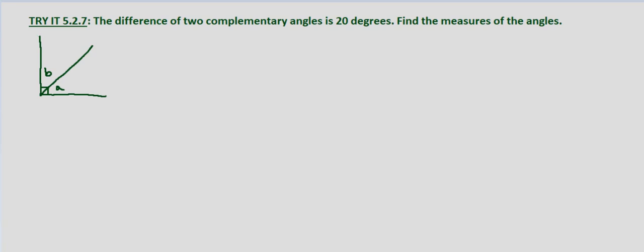So with any geometric problem, the first thing I always do is draw the picture. So what I've done here is I've drawn two complementary angles. They form a 90 degree angle when they are together. So let A, what we're looking for is the measure of each angle. And we know that they're complementary. So let A equal the measure of the first angle.